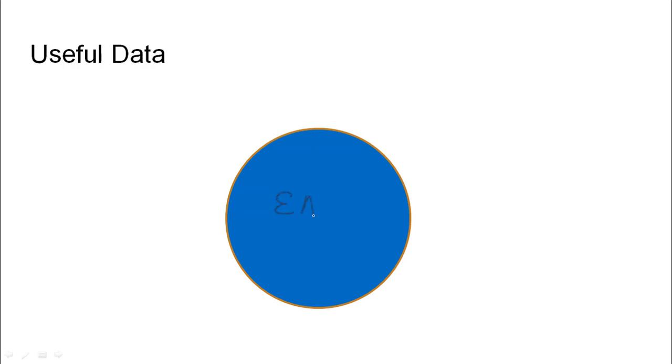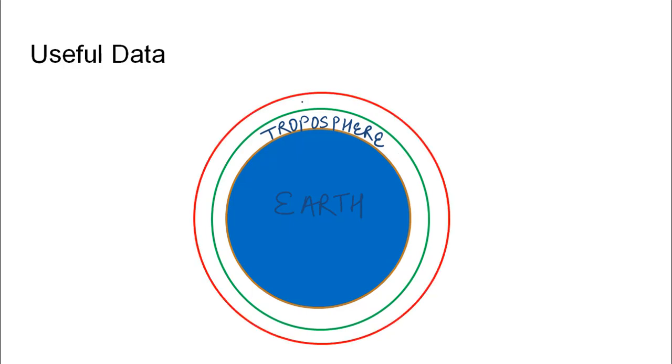If we assume this to be our earth, the innermost layer of atmosphere that exists is called the troposphere. This is the layer in which the atmosphere is viable enough for the survival of life. Just outside this layer exists the stratosphere.